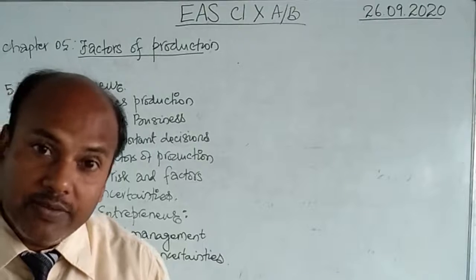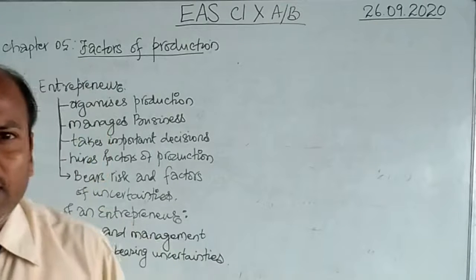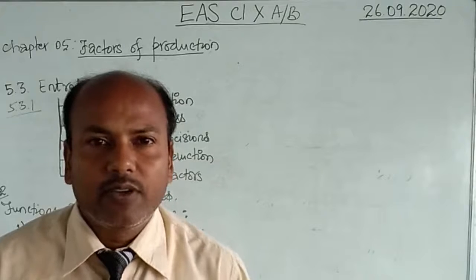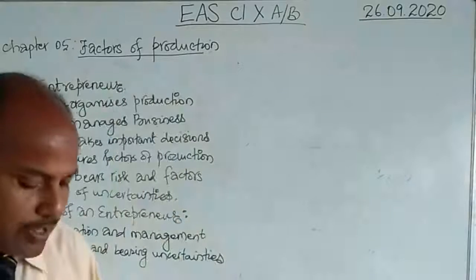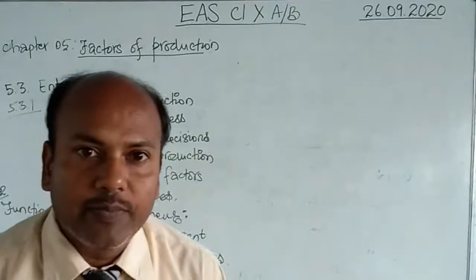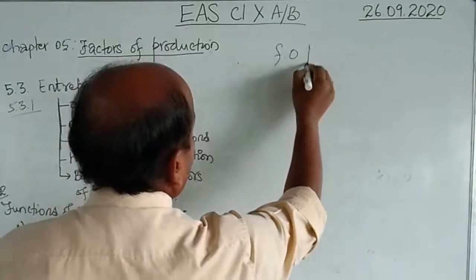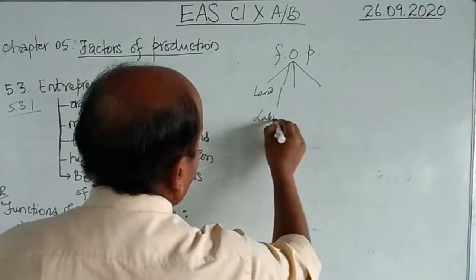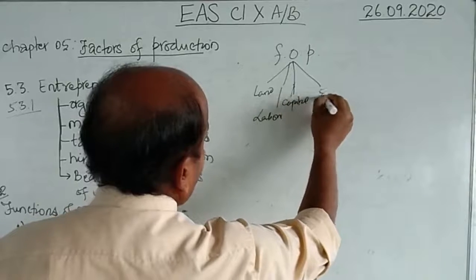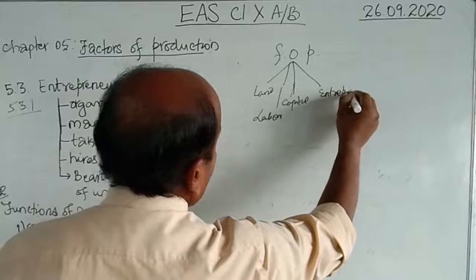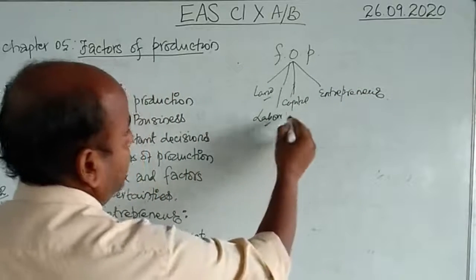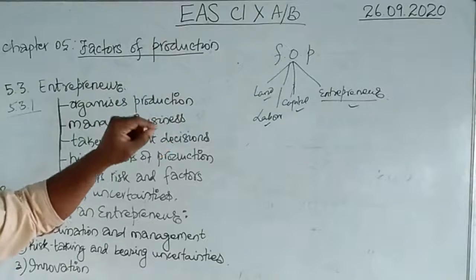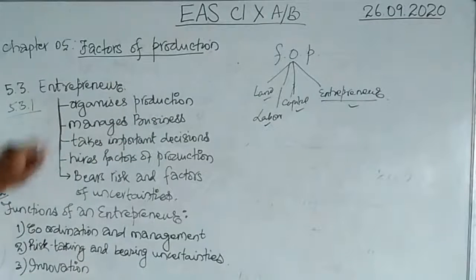A few minor topics I have left out — a brief concept explanation I will give you when we resume class. This is for your examination and a very important concept. We have divided factors of production into land, labor, capital, and the fourth factor: entrepreneurship. We have completed land, labor, and capital, and this is the last topic — entrepreneur.